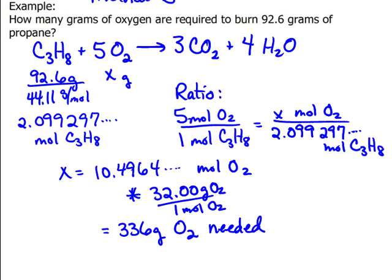So again, in order to do this kind of problem, we recognize that the given grams need to be converted to moles by dividing by molecular weight. Then we can set up our ratio, and then convert back to grams of O2 by using oxygen's molecular weight.